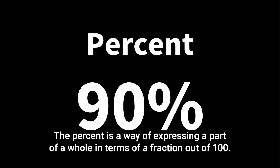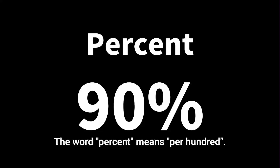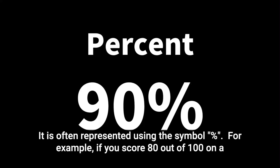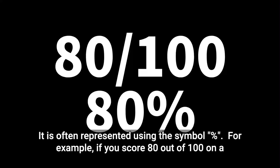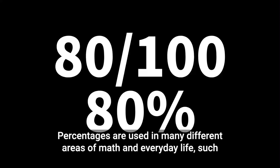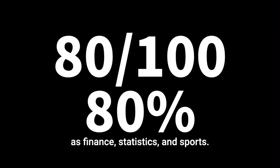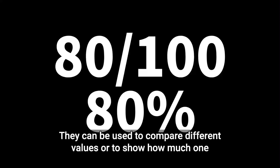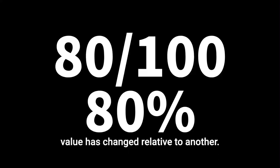Percent is a way of expressing a part of a whole in terms of a fraction out of one hundred. The word percent means per hundred, and it is often represented using the percent symbol. For example, if you score 80 out of 100 on a test, you can express that as 80%, which is the same as the fraction eighty one-hundredths. Percentages are used in many different areas of math and everyday life, such as finance, statistics, and sports. They can be used to compare different values or to show how much one value has changed relative to another.